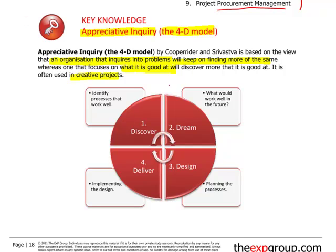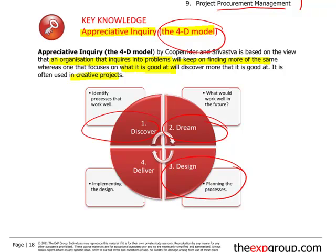It's referred to as the four D model because the four stages all begin with D. The first D is discover — identify processes that work well. The second D is dream — what could work well in the future. The third D is design — planning the processes. And the fourth D is deliver. So: discover, dream, design, and deliver.